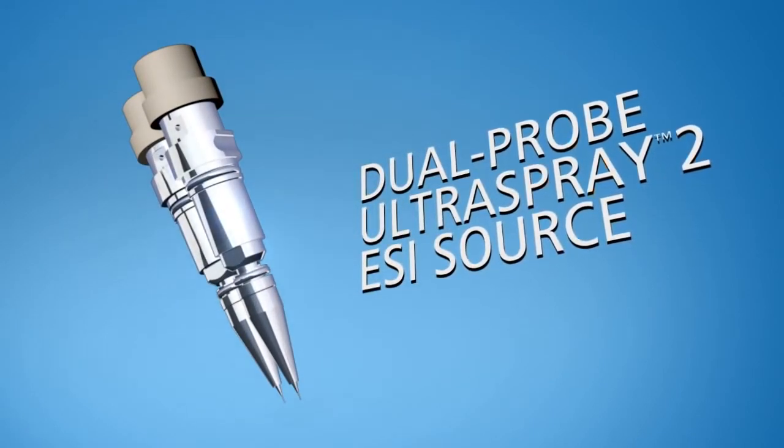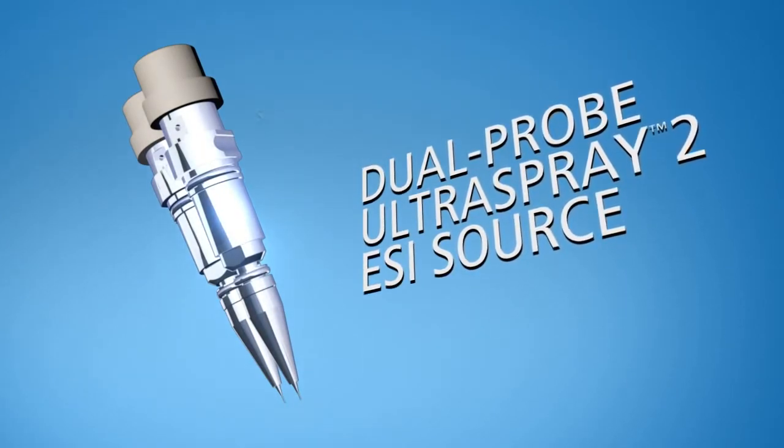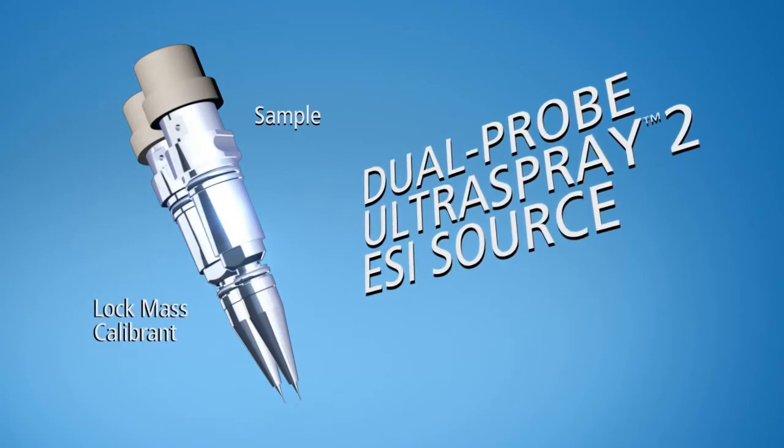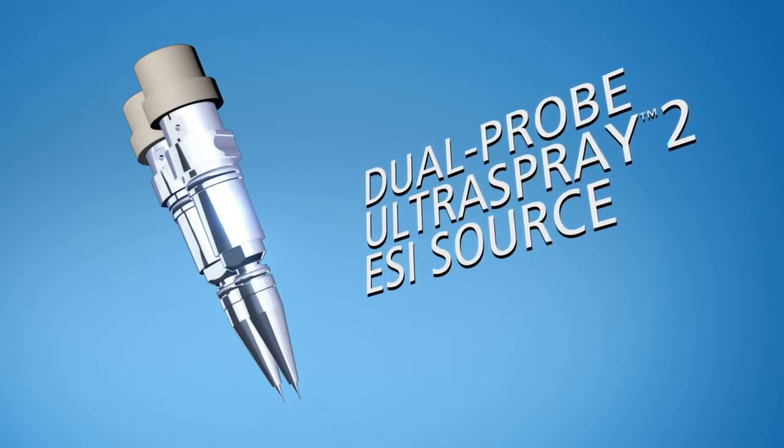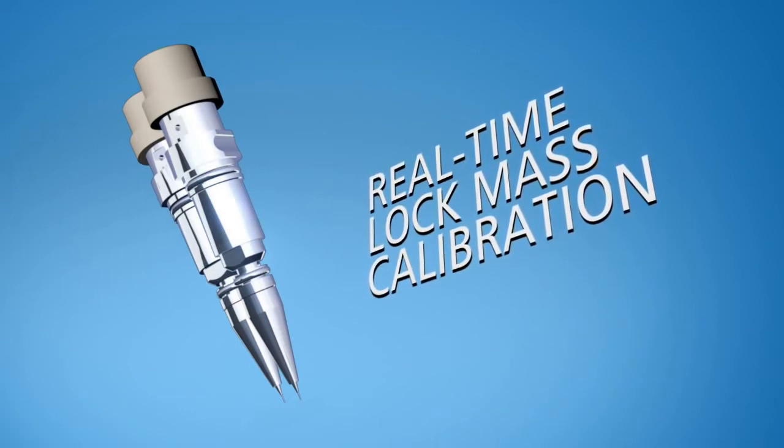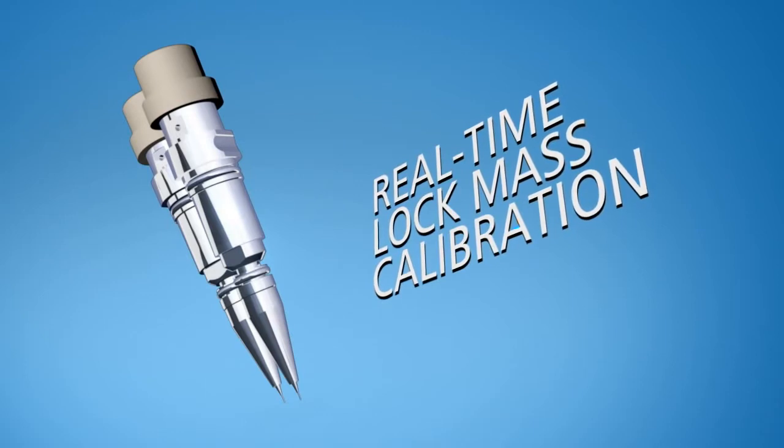The Dual Probe Ultraspray 2 Electrospray Ionization Source allows one probe to be dedicated to your sample and the other to an internal calibrant without complex mechanical operations. By enabling real-time lock mass calibration, this unique design allows on-the-fly method development for enhanced productivity.